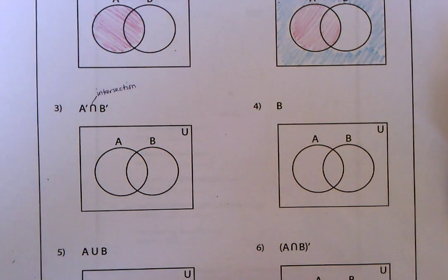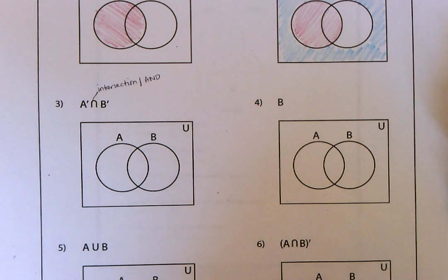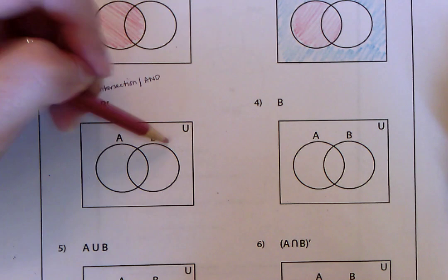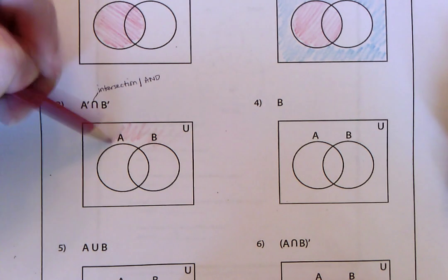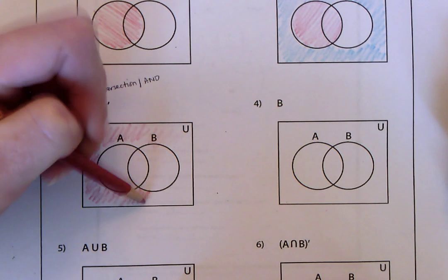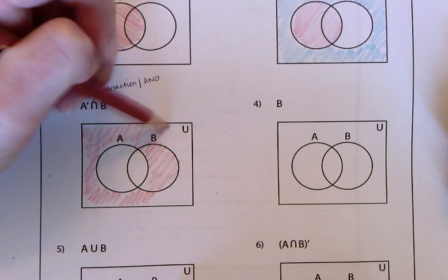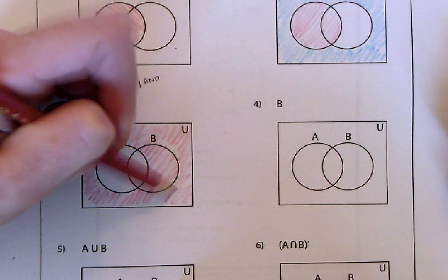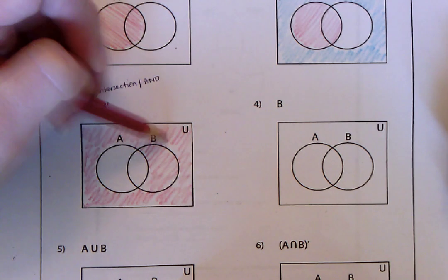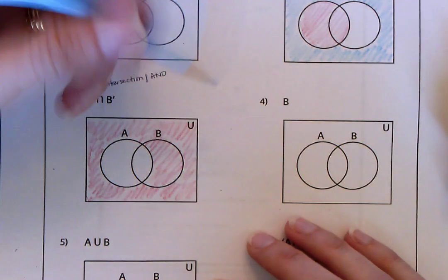It's also, if you think of it, instead of an or statement, this is an and statement. So it's where these two things would intersect. So if I were to shade not A, I'd be shading all of the stuff outside of A. And that includes this in here. So not A would be everything outside of A, but not B would be everything outside of B.